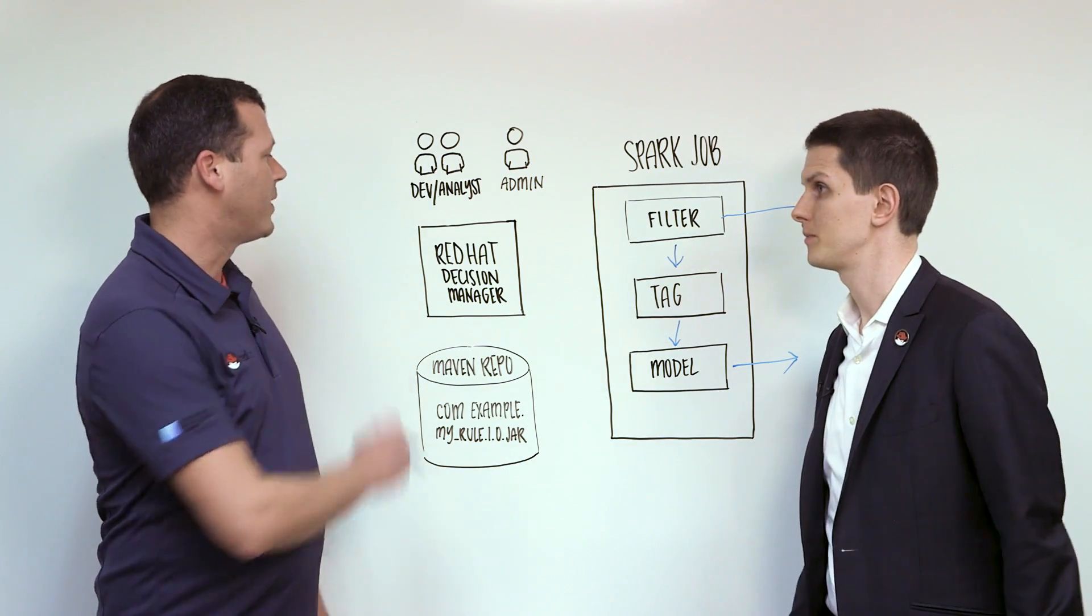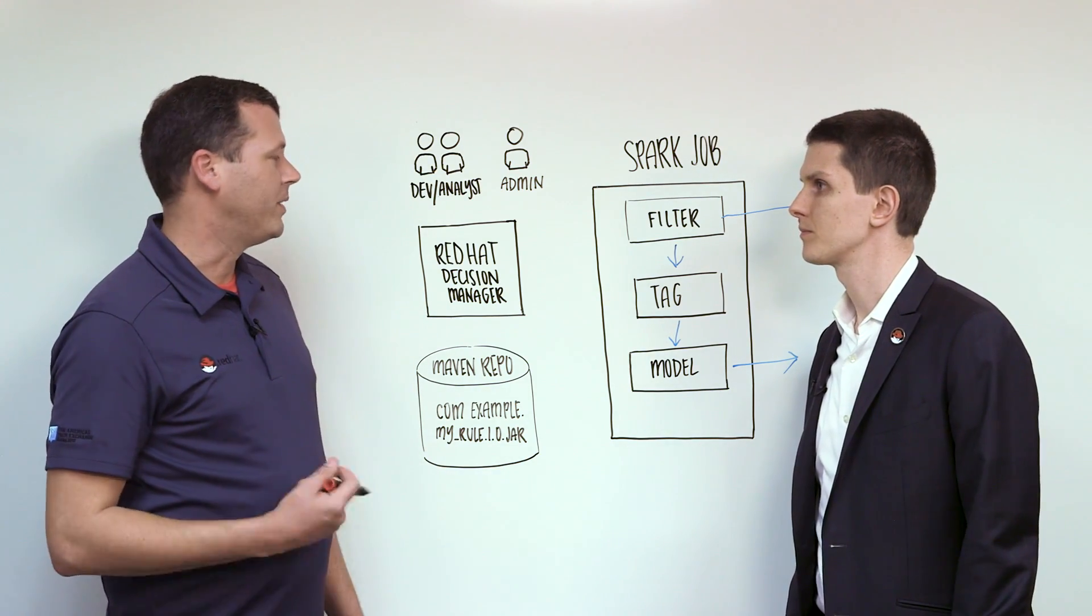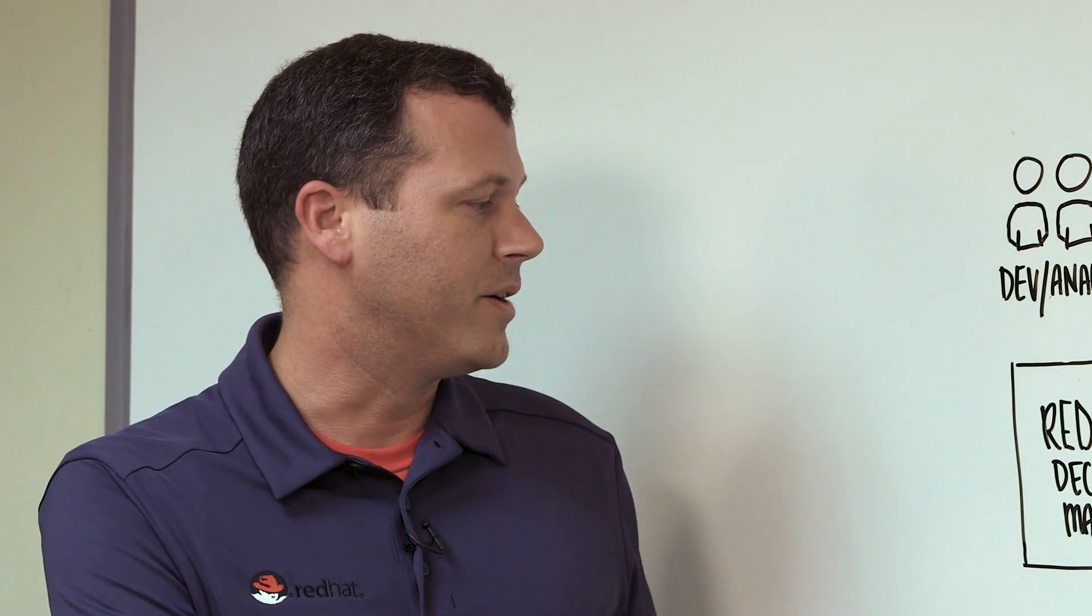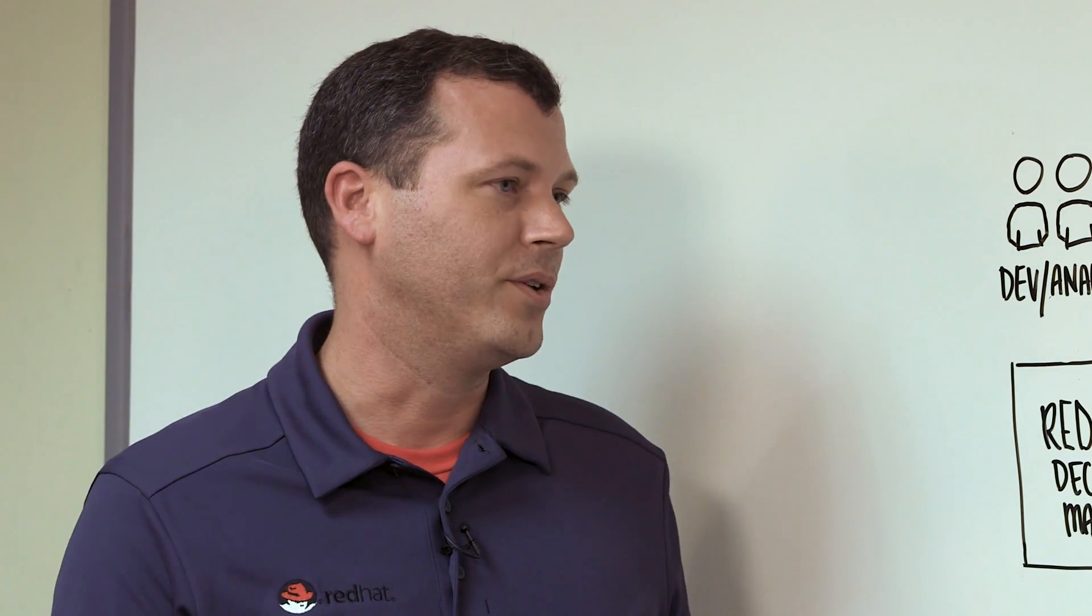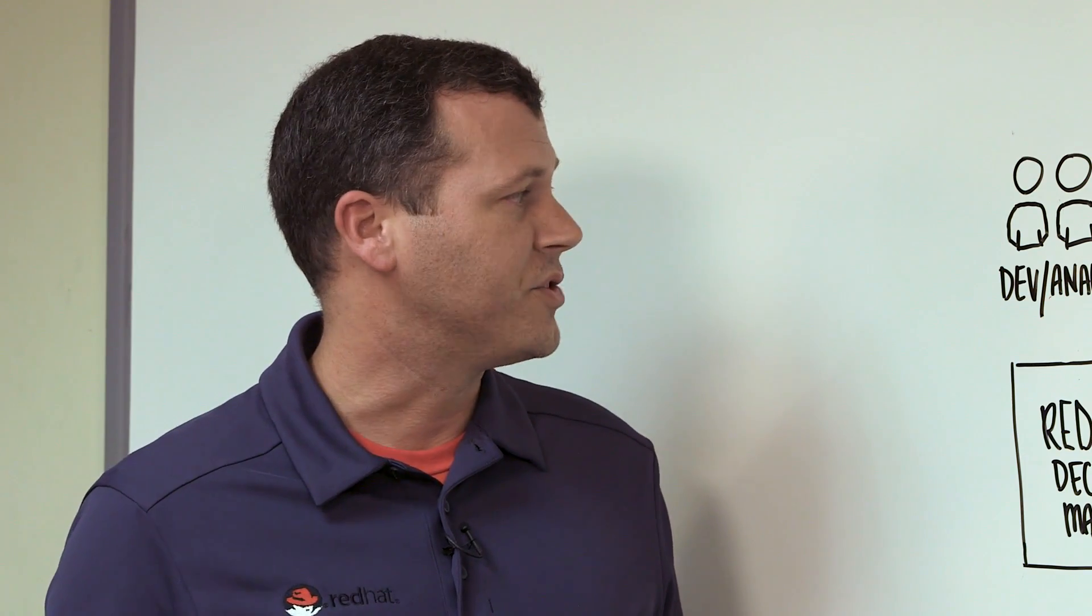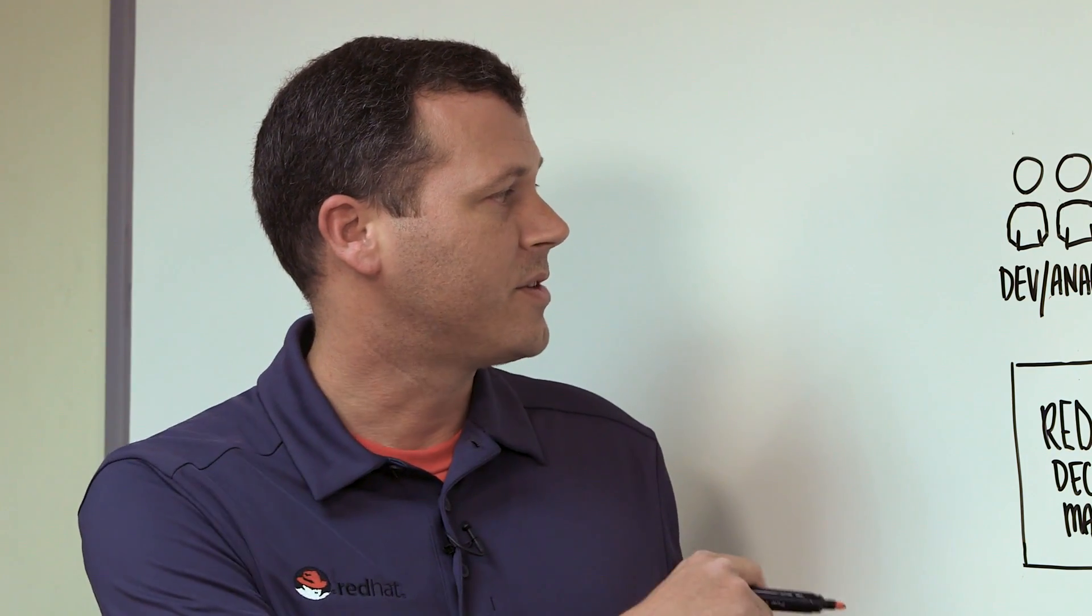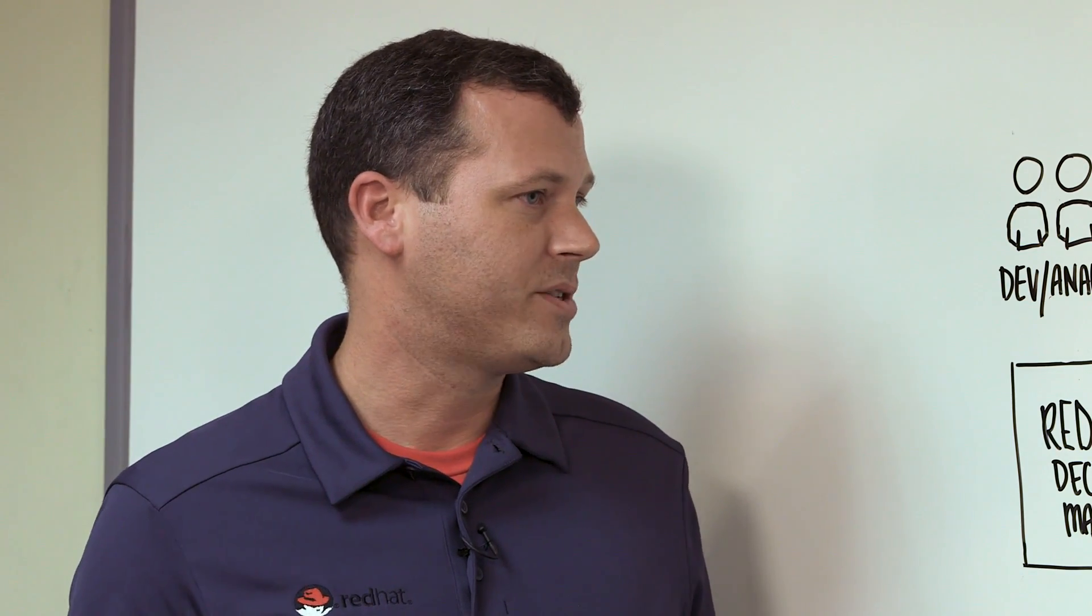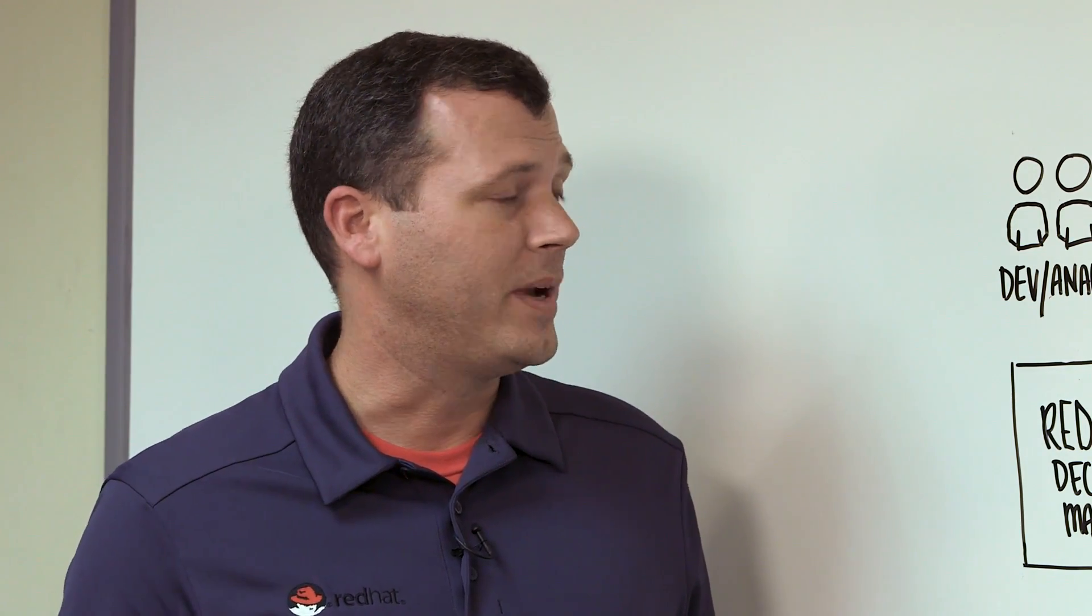So we could use Red Hat Decision Manager, formerly known as Red Hat BRMS. And Red Hat Decision Manager will allow you to separate those rules from your application's code logic. And it also allows your developers and analysts to go in through the web-based UI and create and maintain rules.